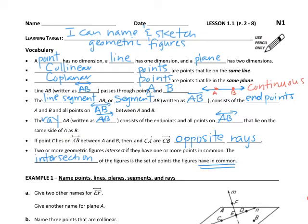Co-linear points are the ones that lie on the same line. Perhaps we have a line — lines always have arrows on both ends. Co-linear points are those that are going to be all on the same exact line. Basically a line is made up of an infinite number of points, and co-linear points lie on that same line.